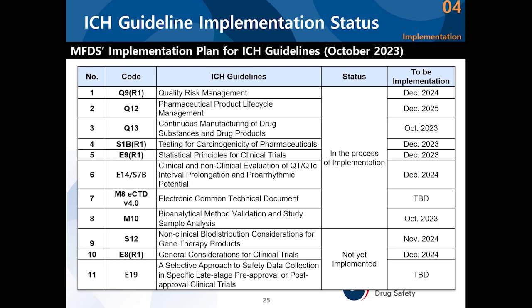This is the status of updates since last year's presentation. As you can see from numbers one through eight, these eight guidelines are currently looking forward to implementation. By the end of this year, or by the end of next year and by 2025, we are working hard to have them implemented. For the remaining three — numbers 9, 10, and 11 — they haven't yet been implemented, and we're expecting them to be implemented by about 2024. However, there are a lot of changes taking place in the guidelines themselves, so there might be some change to the timeline.